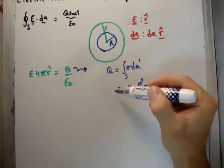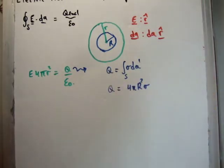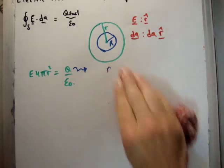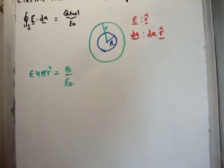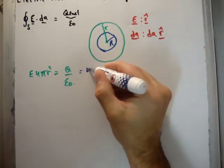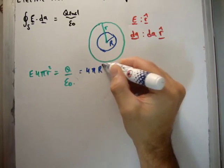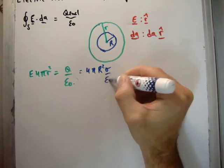So that's equal to the large q, 4 pi capital R squared sigma. So if we plug that into what we have at the moment, we have 4 pi capital R squared sigma over epsilon zero.